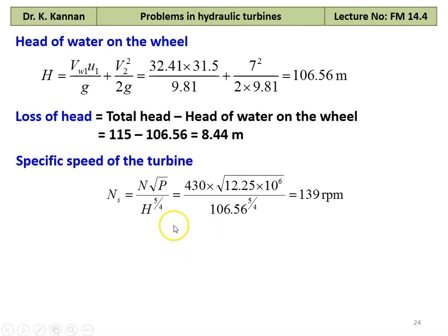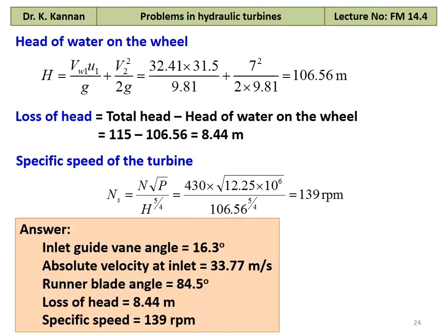The specific speed Ns equal to N into square root of P divided by H to the power 5 by 4, where H is the actual head. So, 430 into square root of 12.25 into 10 power 6 divided by 106.56 to the power 5 by 4 equal to 139 RPM. The answer to the problem: inlet guide vane angle 16.3 degrees, absolute velocity at the inlet 33.77 meters per second, runner blade angle 84.5 degrees, loss of head 8.44 meter, specific speed 139 RPM.